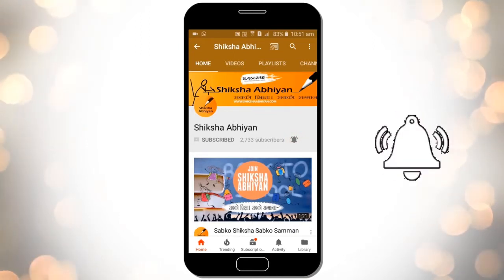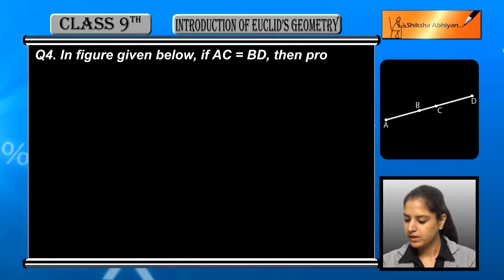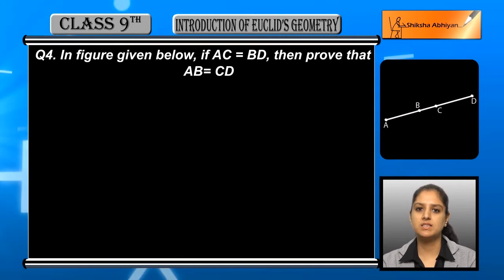Question number four: In the figure given below, if AC is equal to BD, then prove that AB is equal to CD.